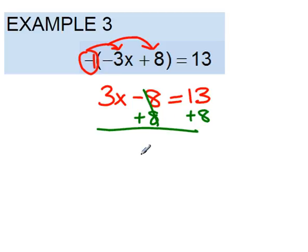That will make these cancel, and we get 3x equals 21. And finally, we can divide by that coefficient, so x will equal 7.